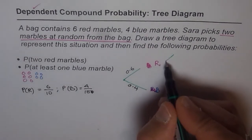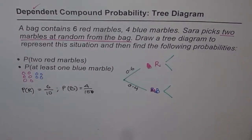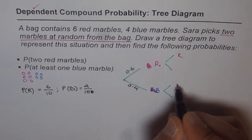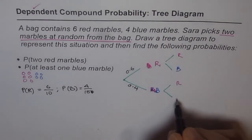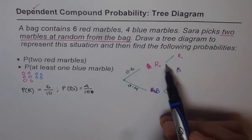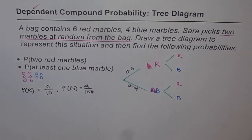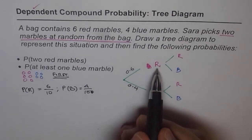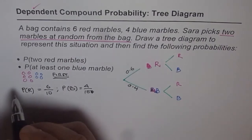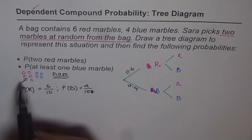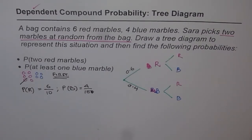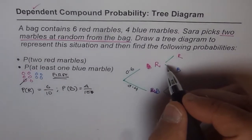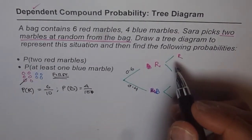Now, what is the probability of picking red a second time once you have picked red first? This is the tricky part. If you picked one red and did not replace it, then there are only 5 reds remaining out of 9 total marbles. So the probability of picking red second is 5 out of 9. The probability of picking blue is still 4 out of 9, since the blues are untouched.